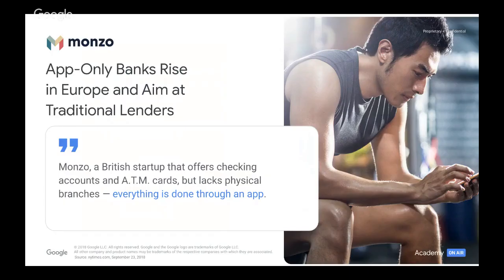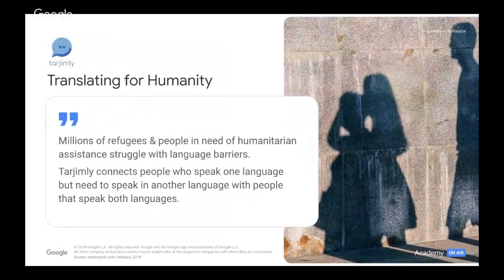Monzo is an app-only bank, and these types of banks are on the rise in Europe, and their audience is focused on traditional lenders. You might also have heard of N26, based in Germany, or Revolut. In this case, Monzo, which is a British startup, offers checking accounts and ATM cards, but it does not have any physical branches. Everything is done on the app itself.